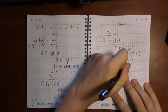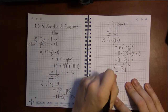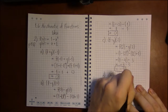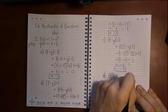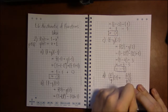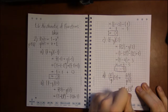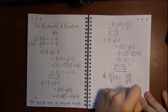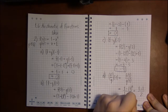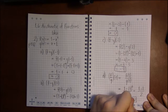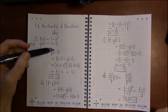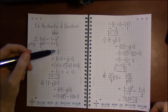Finally, for part d, f over g at 1. You find f of 1 and g of 1 and divide. f of 1 is 1 minus 1 squared, g of 1 is 1 plus 1. So we have 1 minus 1 on top and 2 on the bottom, which is 0 over 2, coincidentally again 0.